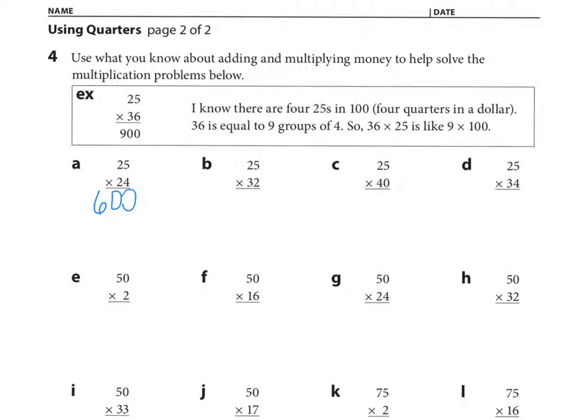Let's look at B, 25 times 32. I know 32 is eight groups of four. So I can really think of this as 8 times 100, which equals 800. C, 25 times 40. I look at 40 and I ask myself, how many groups of four is in 40? So one more time, let's ask that question. How many groups of four is in 40? That's right, 10 groups of four. So I can rethink this problem as 10 times 100. 100 times 10. And what does 100 times 10 equal? 1000 is correct.